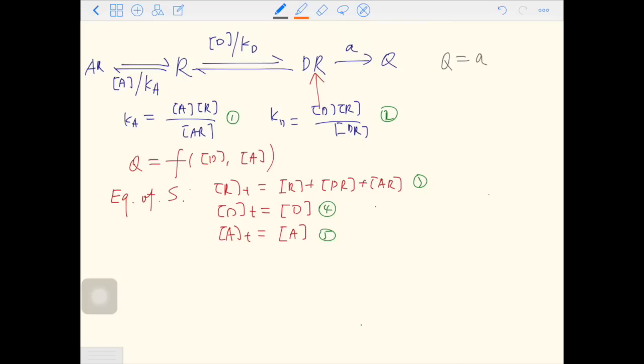Q is A times DR. In equation three, on the right, we have R, the free form of R. We have DR and AR. So we are going to replace R and AR with some terms that contain DR.